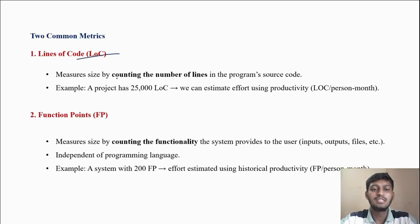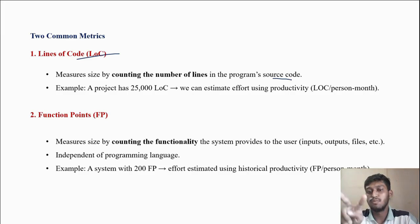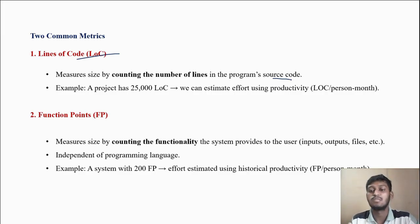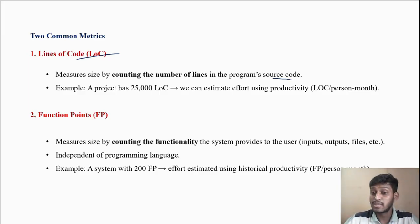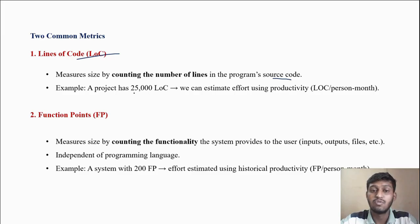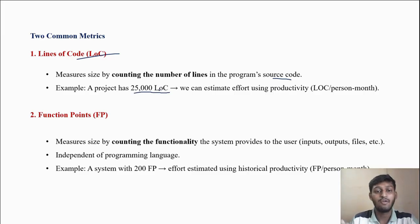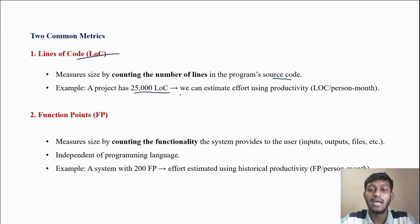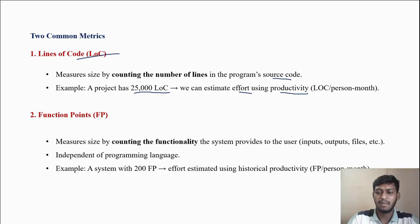Line of code means measuring size by counting the number of lines in the program's source code. On the basis of how many lines are in the source code, we determine how much work, effort, cost, and time will be needed. For example, if a project has 25,000 lines of code, we can estimate effort using productivity.